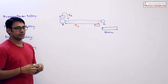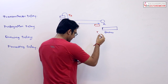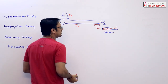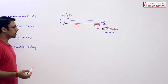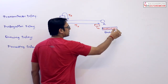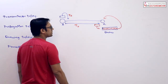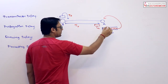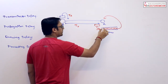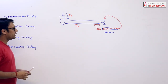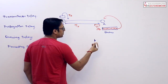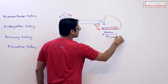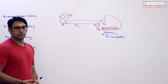The receiver maintains a queue. Whenever a data packet is received, it is placed inside this queue. When the receiver is ready to process, it takes the first data packet from the queue — because in a queue, what comes first is processed first. The time for which the data packet waits in the queue is called queuing delay.